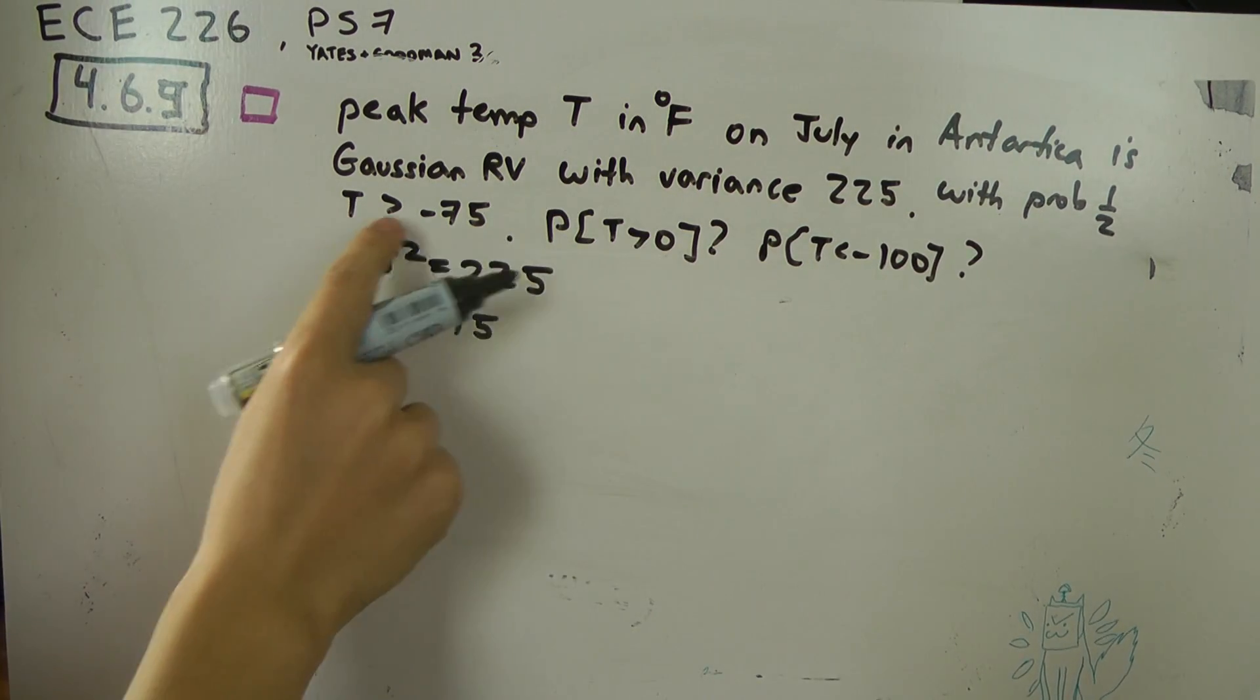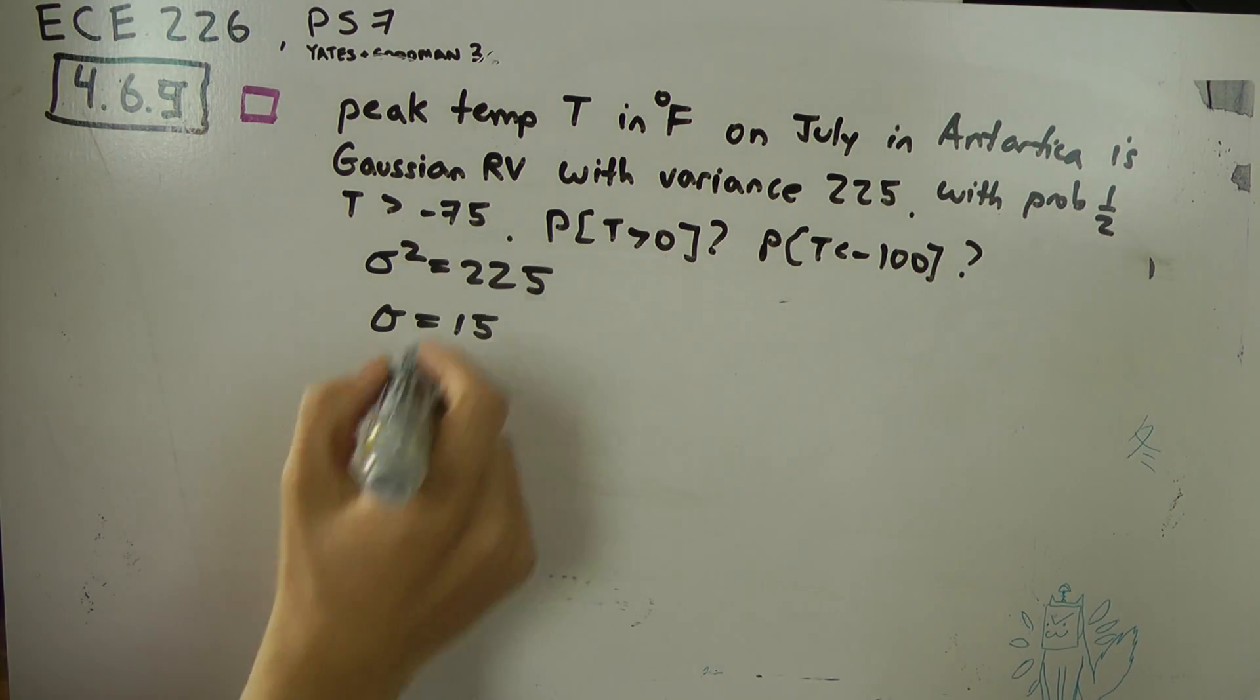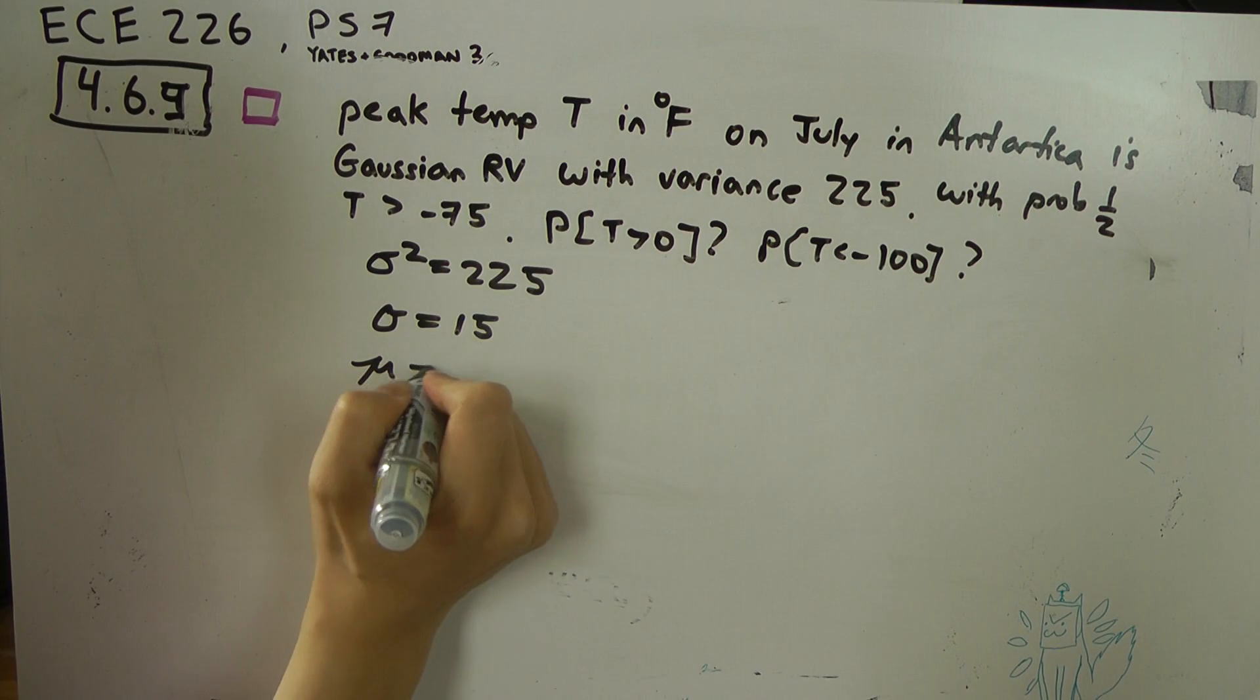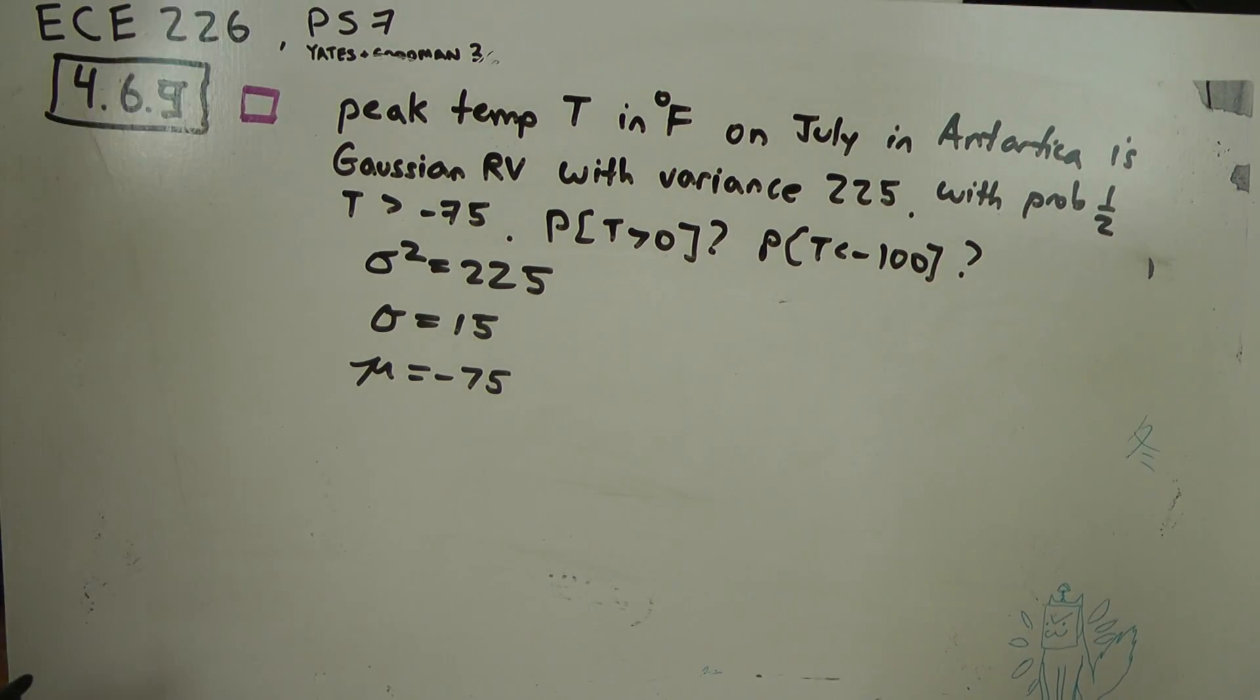Probability of one-half that temperature is greater than minus 75 tells us the mean. Because half the probability lies on the right or the left. It's symmetric.